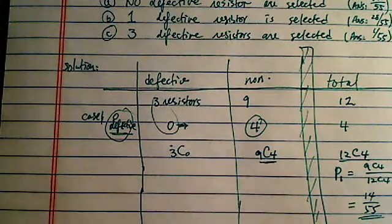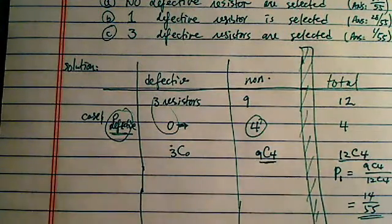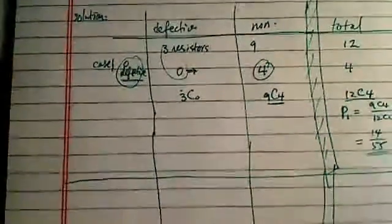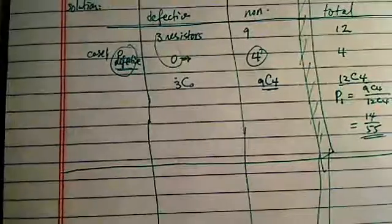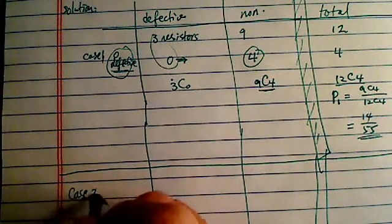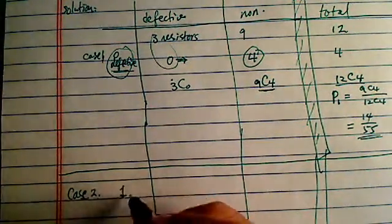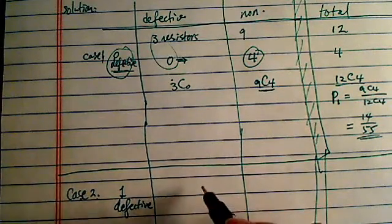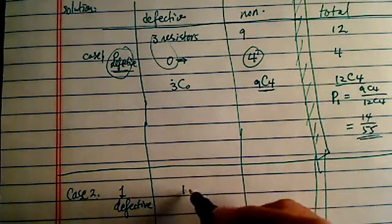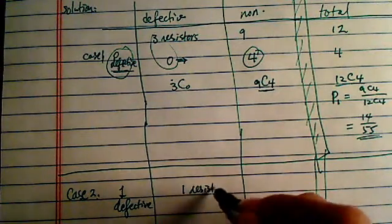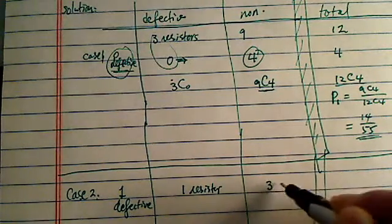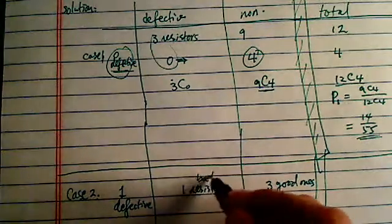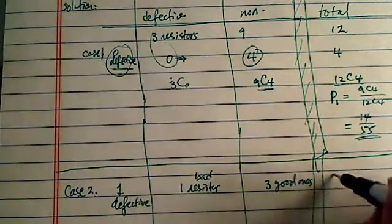Let's go on to the next case. Let's draw a line over here. Next case. Now this one, case 2, I want to have 1, only 1 defective. So I need 1 resistor from the defective, and I need 3 good ones. 1 bad resistor, because overall I'm still choosing 4.